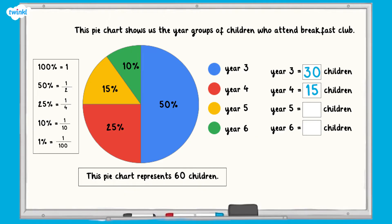The yellow sector represents 15%. 10% of 60 equals 6, so 5% of 60 equals 3. 15% equals 6 add 3, which is 9. Nine of the children were in Year 5.